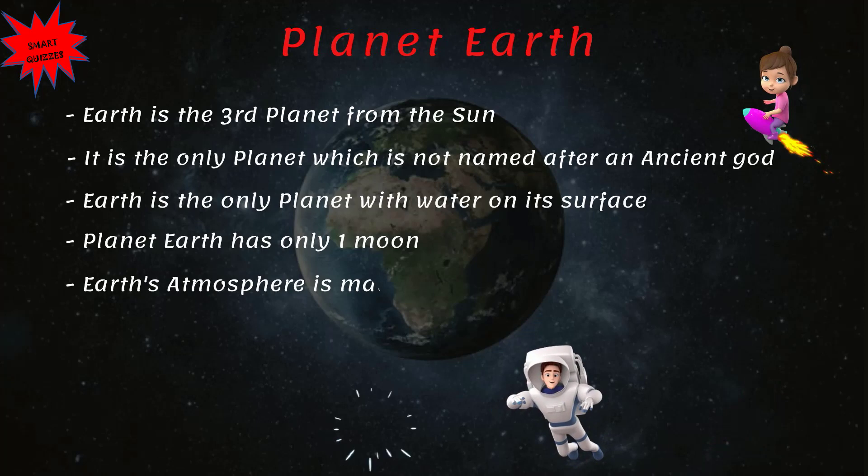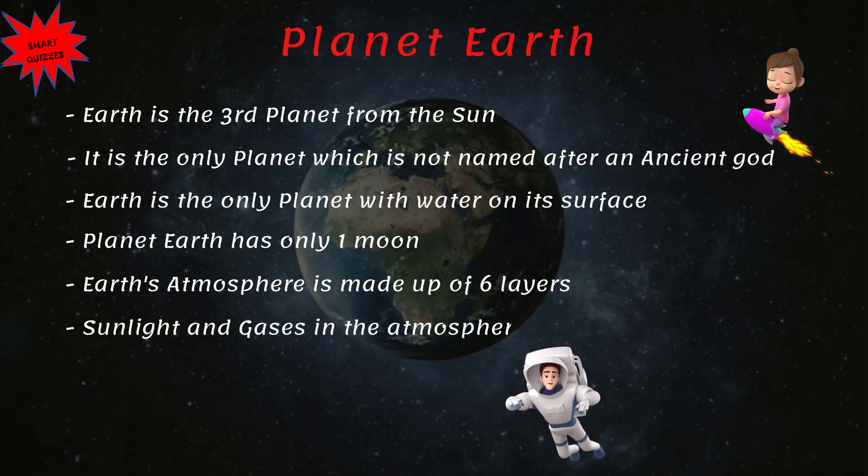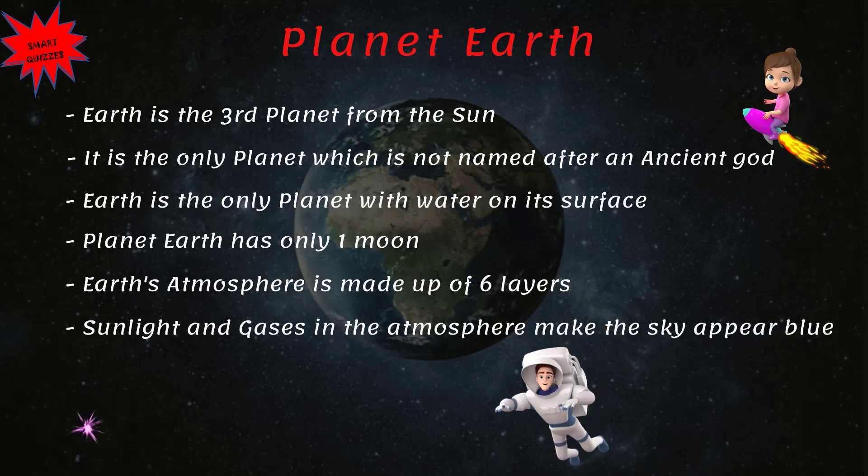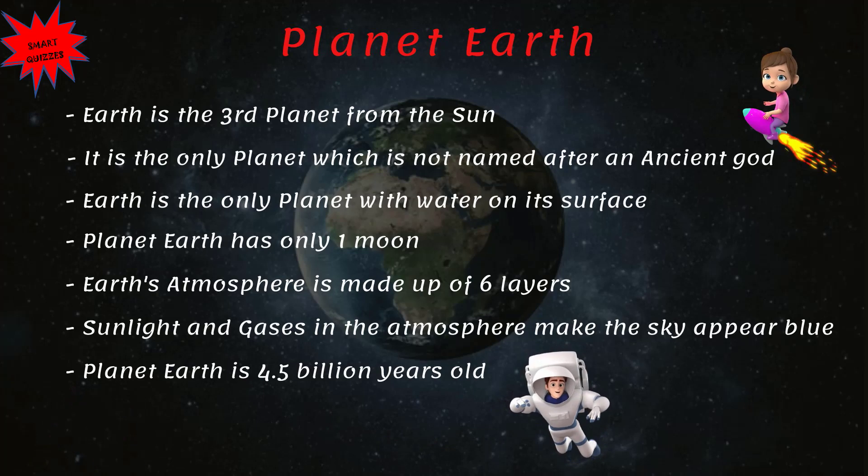Earth's atmosphere is made up of six layers. Sunlight and gases in the atmosphere make the sky appear blue. Planet Earth is 4.5 billion years old.